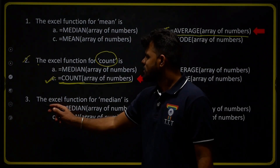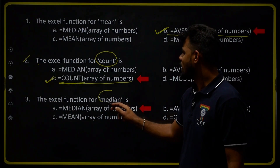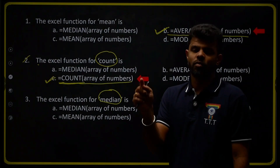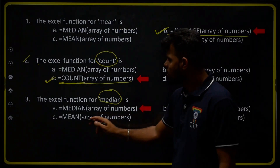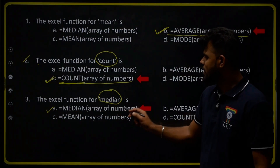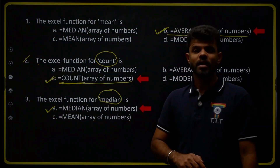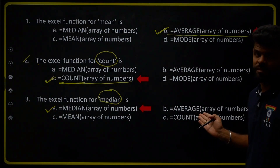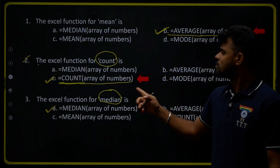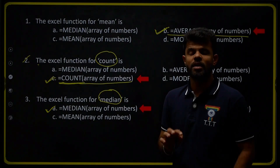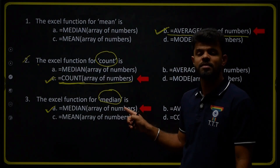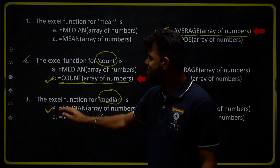Third question: the Excel function used for the calculation of median. The formula is =MEDIAN(array of numbers). Therefore option A is the right answer, because =MEDIAN(open bracket, array of numbers, close bracket) is the correct formula. We will not use mean or any other formula. Therefore option A is the right answer.